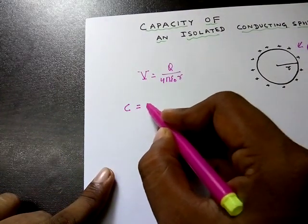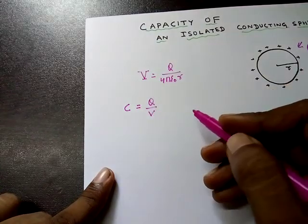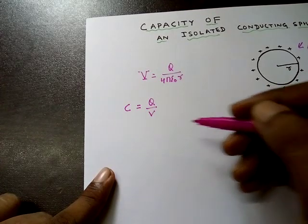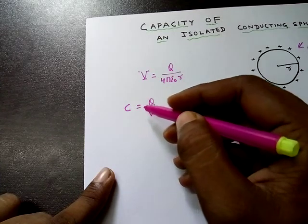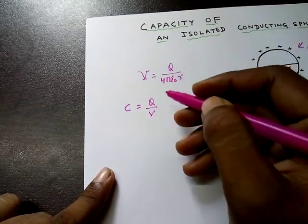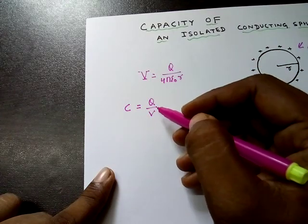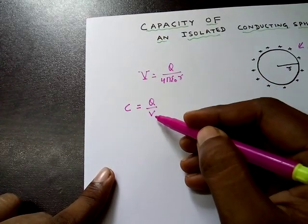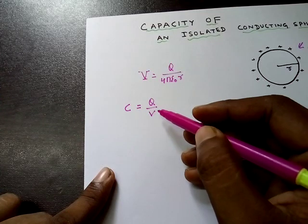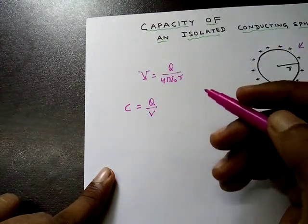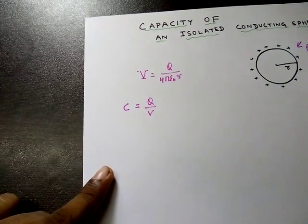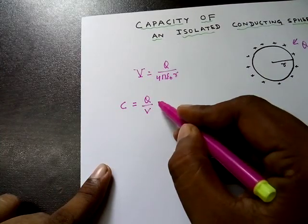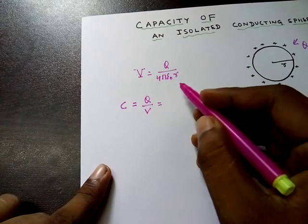Now we know very well that capacity, that is C, is equal to Q by V. From the previous video on capacitance, I told that it is the ability to hold the charge and it is numerically equal to the charge given to rise the potential by unity. So this is equal to charge per unit potential. C is equal to Q by V. If I am putting the value of Q by V from here, I will get the result 4πε₀R.